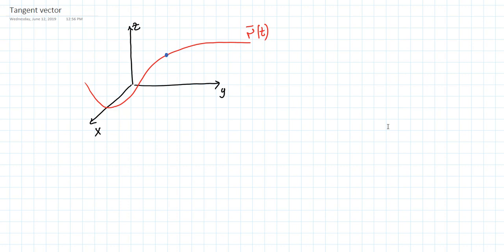Let's talk about the geometric meaning of the differentiation of the vector function. We're given a curve in 3D using the vector function R of t. By choosing different values for t, we can find the points on this curve.